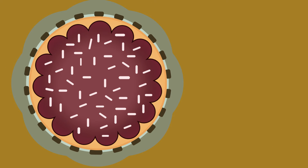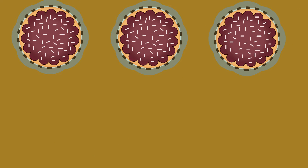Mom and Mia decided to start with one whole cake. The denominator is one because the cake is not cut into pieces. The numerator is also one because you have one piece. They have three cakes, and each cake can be represented as one over one.